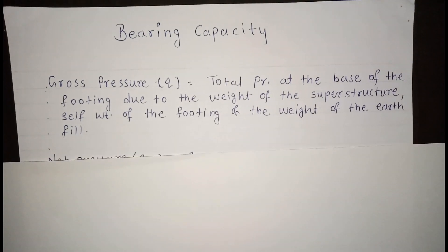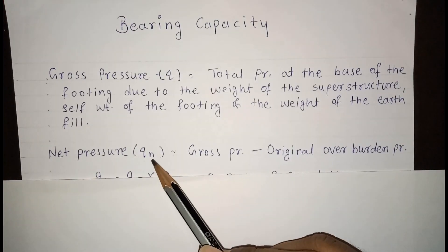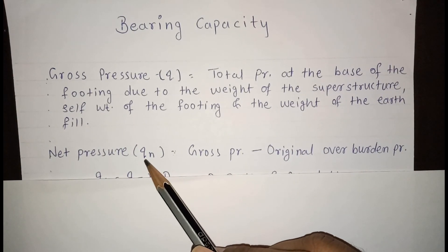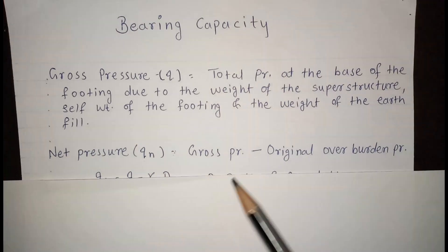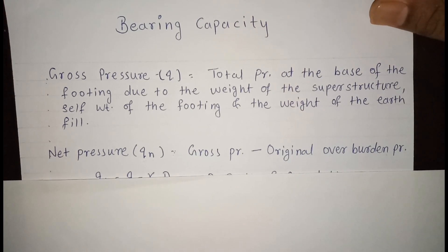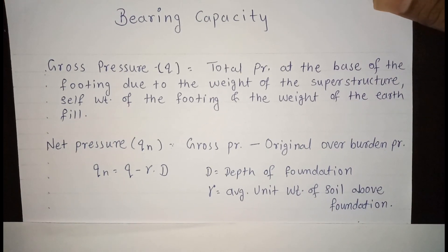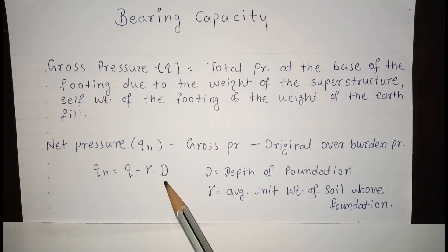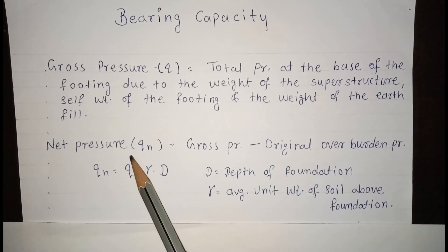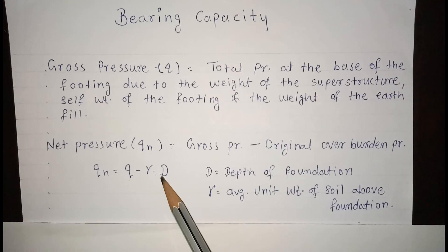The second definition is net pressure, denoted by QN — N stands for net, Q stands for pressure. Net pressure is equal to gross pressure minus original overburden pressure. Here, overburden pressure is γD, which is the backfill of the soil on the footing. So QN = Q − γD, where Q is the gross pressure and γD is the original overburden pressure.